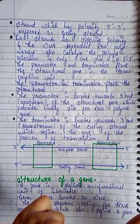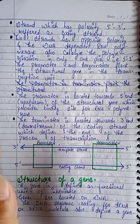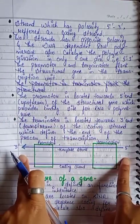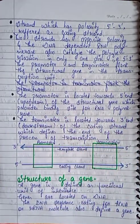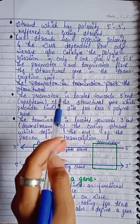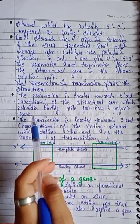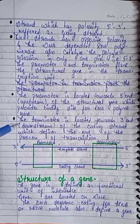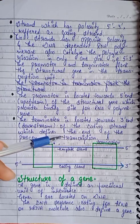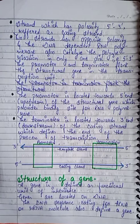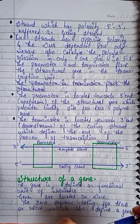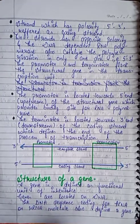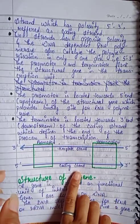The promoter and the terminator flank the structural gene in a transcription unit. The structural gene has a promoter on one side and a terminator on the other. The promoter is located towards the 5' end of the structural gene and provides the binding site for RNA polymerase. The terminator is located towards the 3' end of the coding strand and defines the end of the process of transcription.